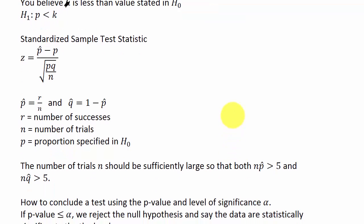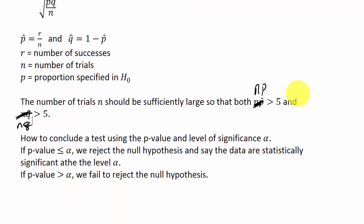The number of trials N should be sufficiently large so that both N times P is greater than five and N times Q is greater than five. Actually, that is a typo there—those should be N times P and N times Q. Now, how to conclude the test using the p-value and level of significance alpha. If the p-value is less than or equal to alpha, we reject the null hypothesis and say the data are statistically significant at the level alpha. If the p-value is greater than alpha, we fail to reject the null hypothesis.